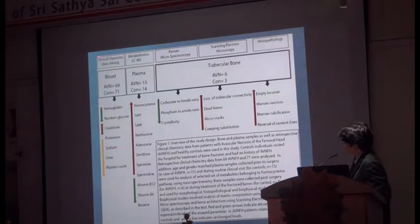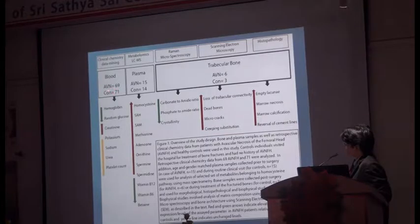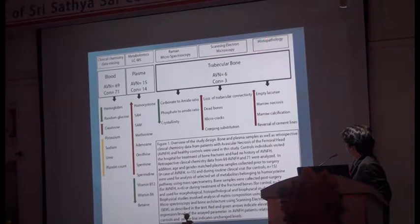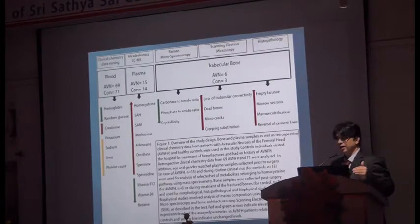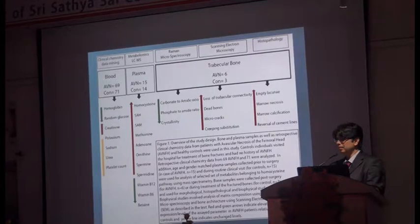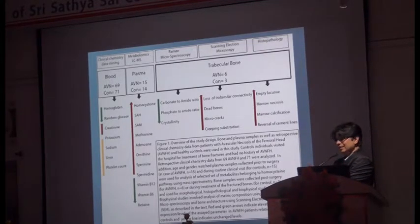In brief, the clinical chemistry data was done across many patients — controls, AVN, and metabolomics — along with Raman microspectroscopy, scanning electron microscopy, and histopathology, all of which we have discussed. There is big potential here for prevention of disease, or at least arresting the disease at an early stage.